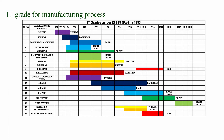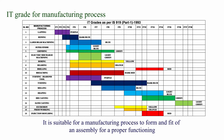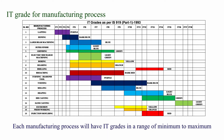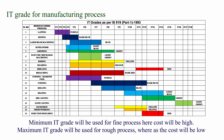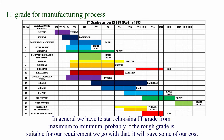We are going to see IT grade for manufacturing process. It is suitable for the manufacturing process to ensure form and fit of an assembly for proper functioning. Each manufacturing process will have IT grades in a range from minimum to maximum. The minimum IT grade is used for fine processes — here the cost will be high. The maximum IT grade is used for rough processes — whereas the cost will be low. In general, we have to start choosing the IT grade from maximum to minimum. If the rough grade is suitable for our requirement, we go with that, as it will save some cost.